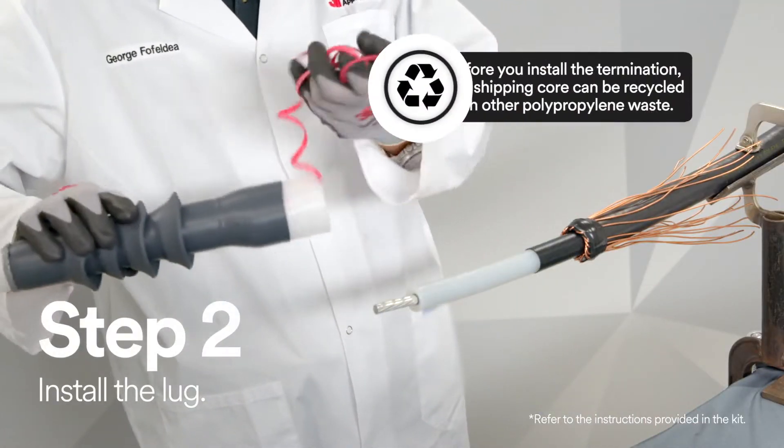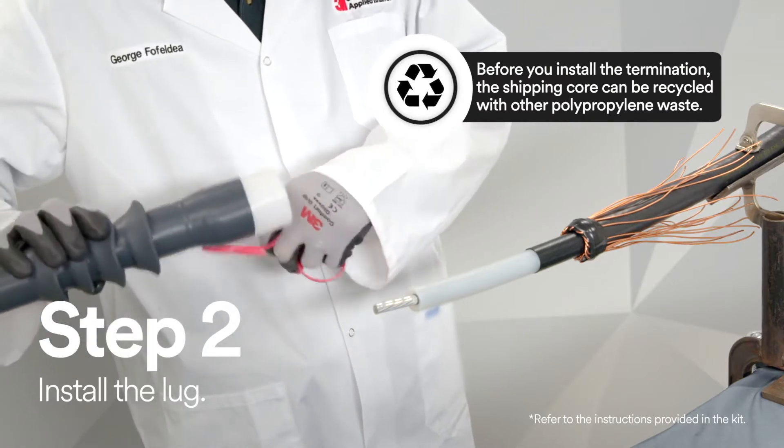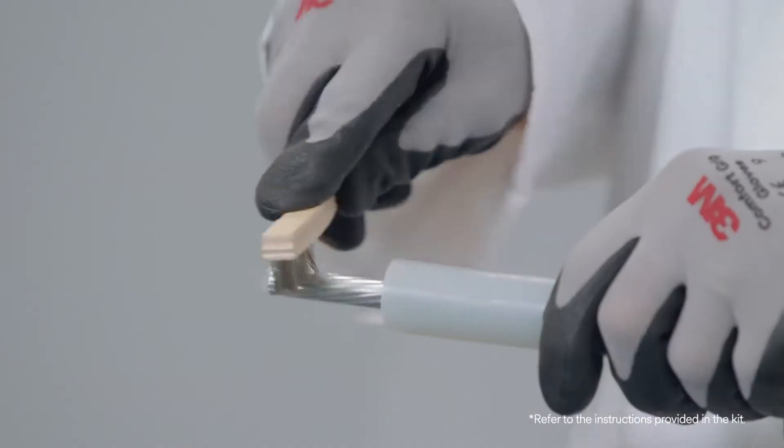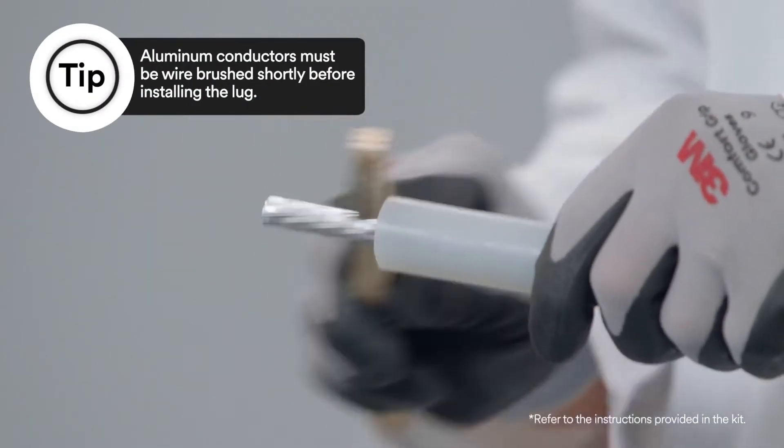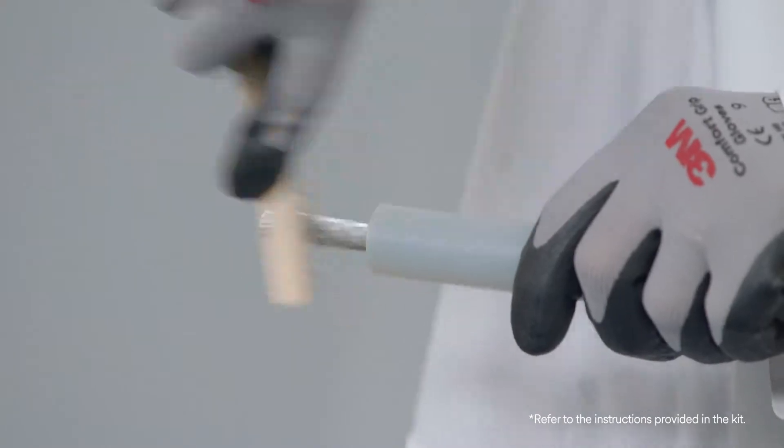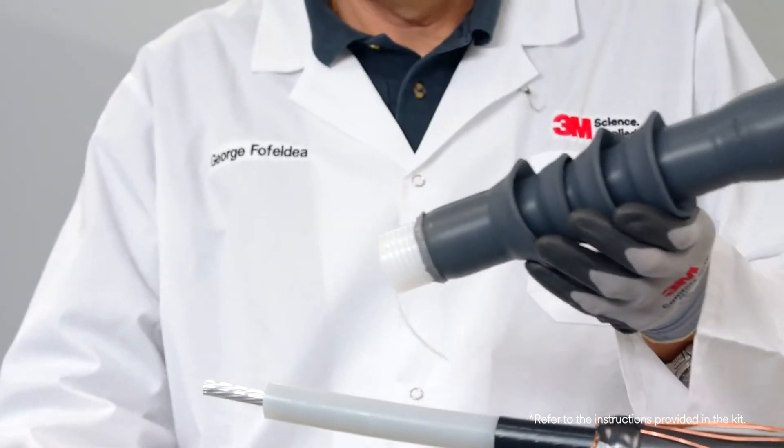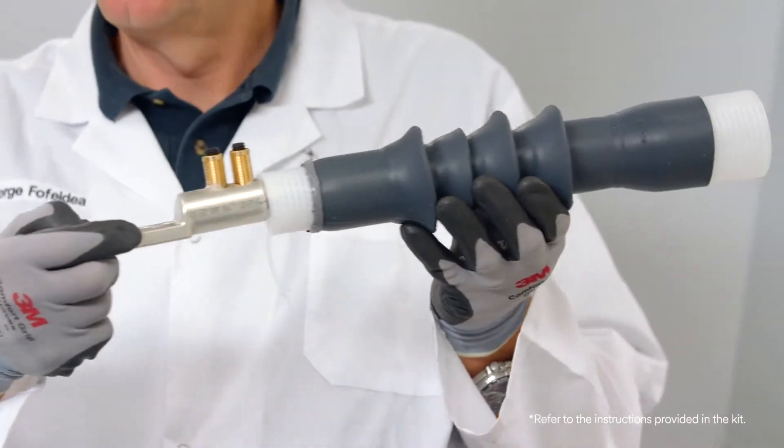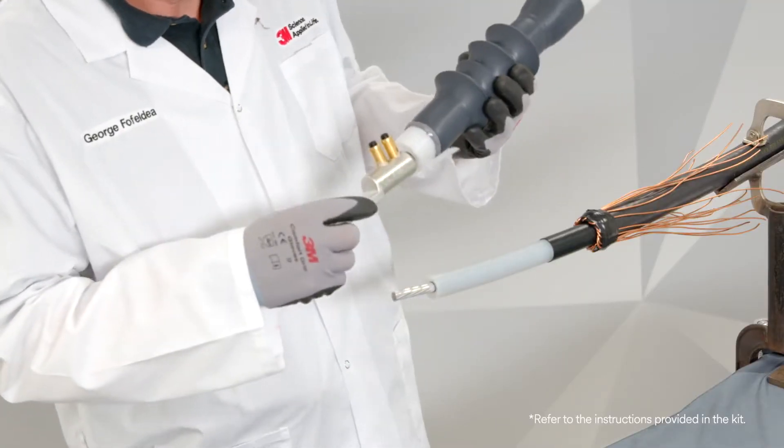After you prepare the cable, you need to remove the red shipping core. Then you need to make sure that the 3M Cold Shrink QT3 Silicone Rubber Skirted Termination Assembly fits over the selection lug or connector before you install either the lug or connector.